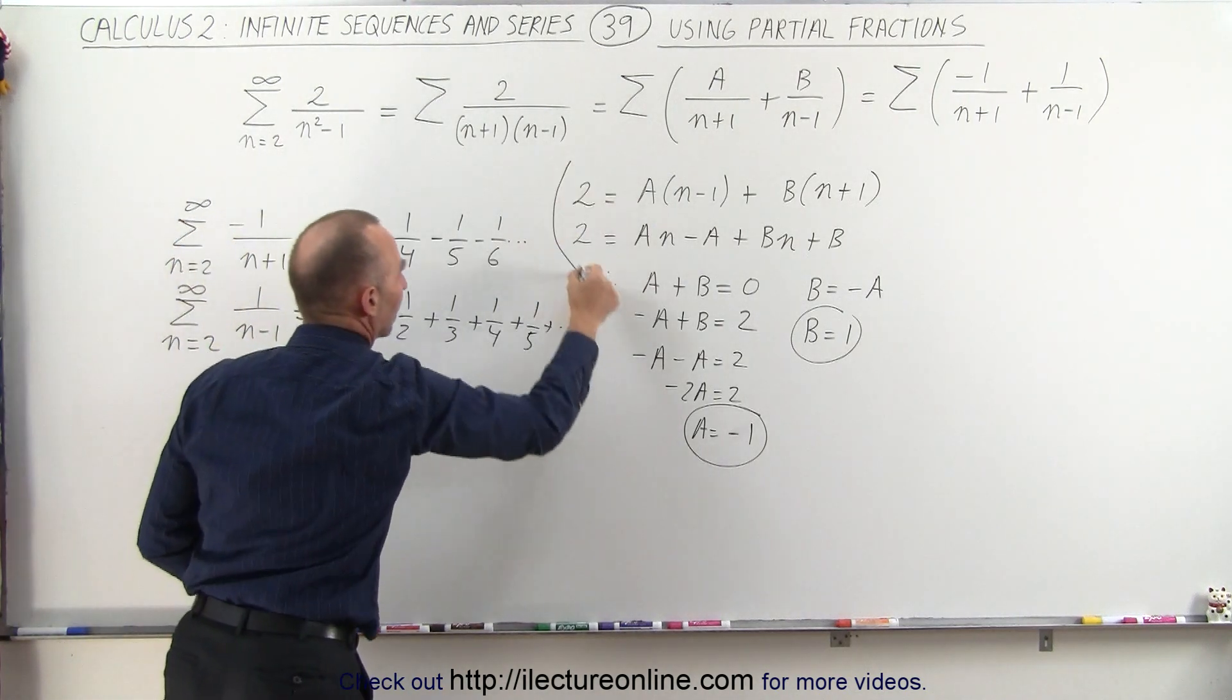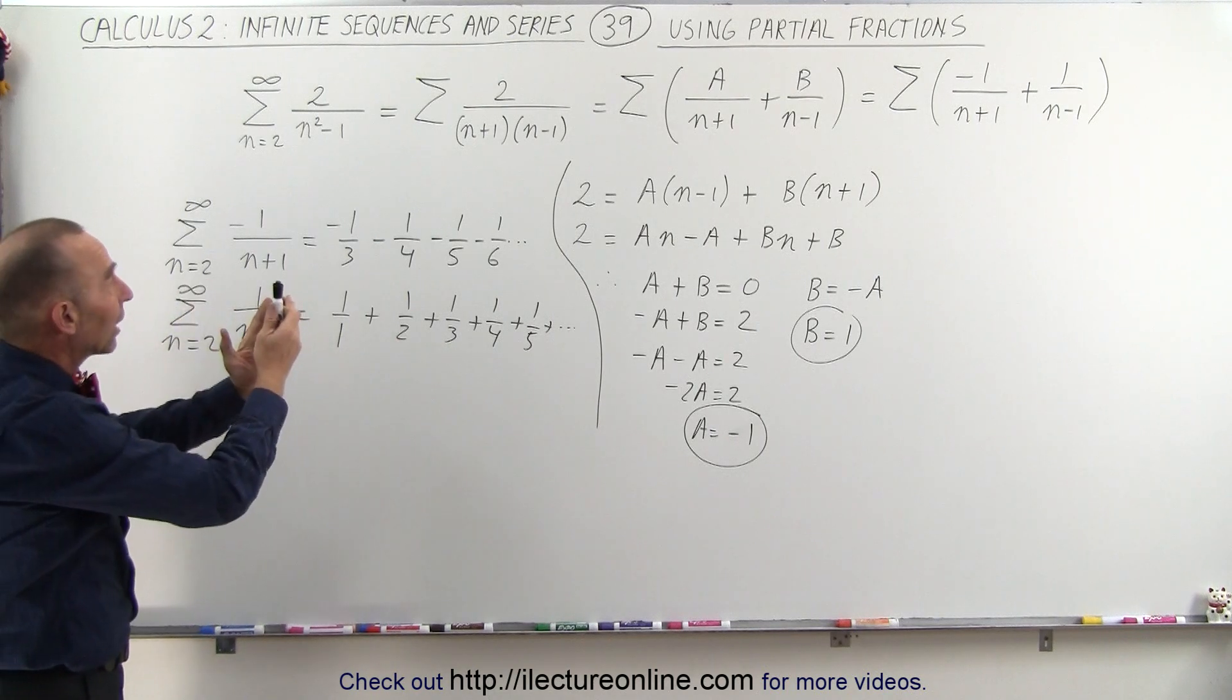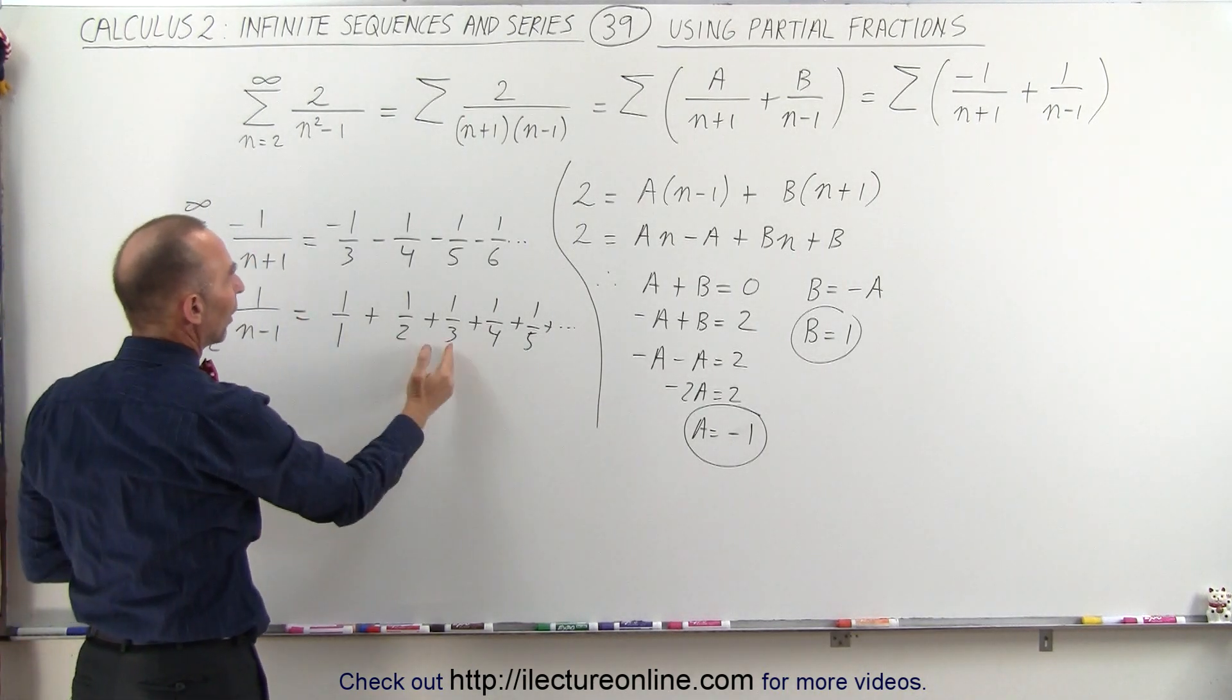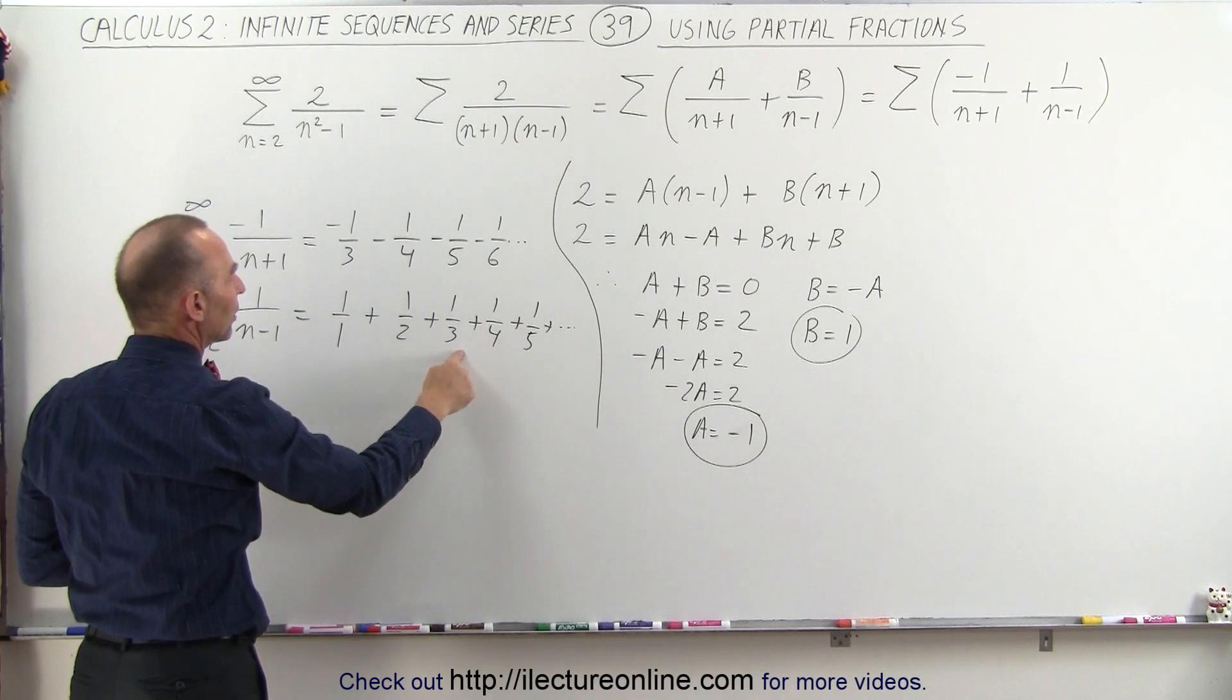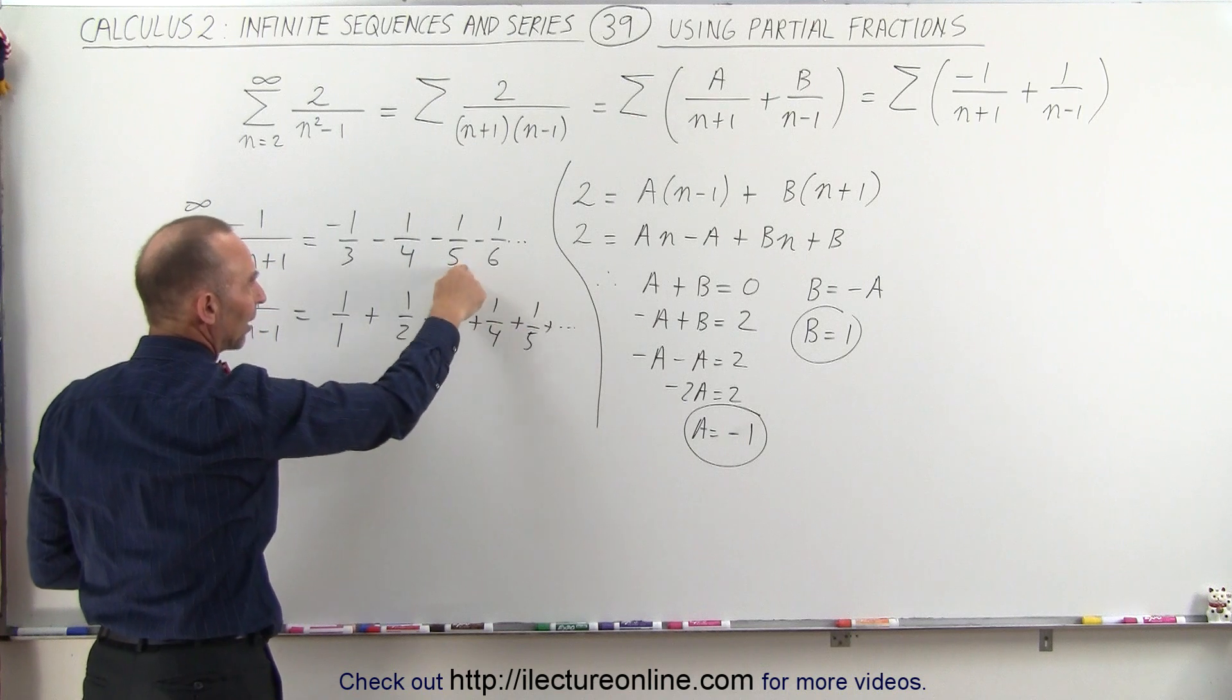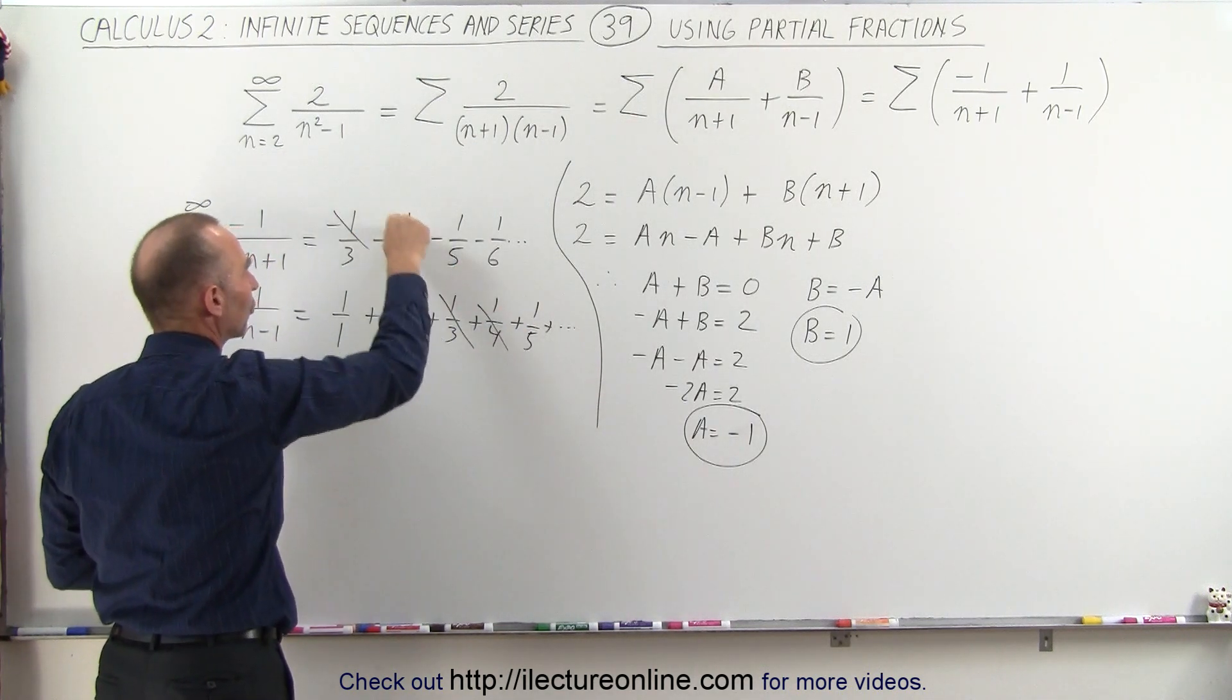And now, let me put a line here so we don't get confused. So, now, since we have to add those two together to get the total sum, notice that after we get to the 1 third part, we have a 1 third here and a minus 1 third, a 1 fourth and a minus 1 fourth, a 1 fifth and a minus 1 fifth, meaning all these terms cancels out all those terms.